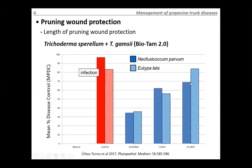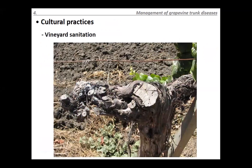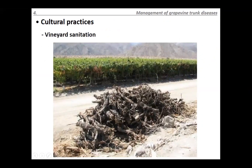Field trials are now underway to generate data for product registration, with the goal of giving growers in Canada tools to control these diseases. In terms of cultural practices and vineyard sanitation, all infected symptomatic wood should be kept away from the vineyard, as these are the areas where fruiting bodies with spores are found. Pruning debris should not be left near the vineyard; where permitted, growers burn it, or remove it to prevent inoculum from returning to current vineyards.